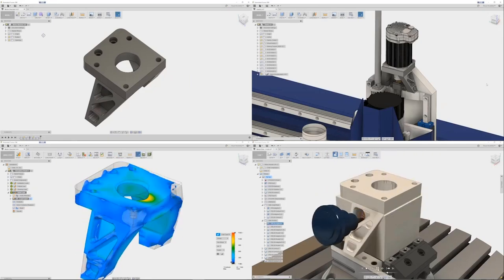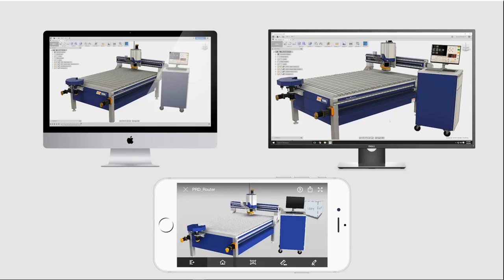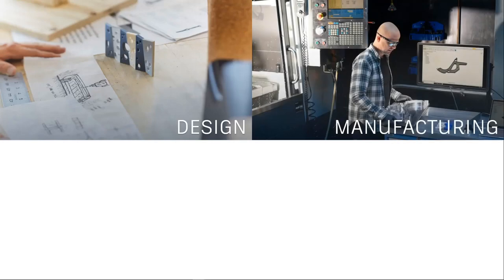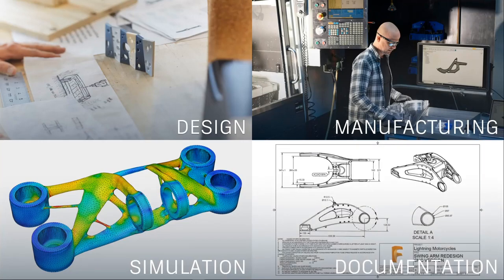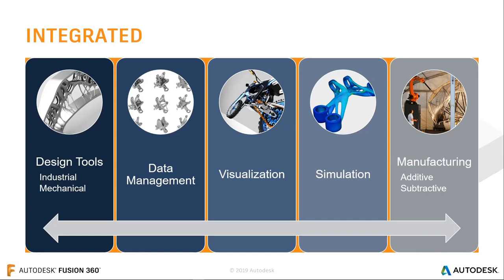Fusion 360 is the next-generation product innovation platform designed to work on Mac, PC, and devices. It has design capabilities, manufacturing capabilities, simulation, and documentation — all in one package. There is no need to export data from one package to another. When a design change is made — such as changing a size or removing a hole — the manufacturing workspace automatically updates the toolpath. Making a change in one spec updates the rest, making end-to-end product development seamless.